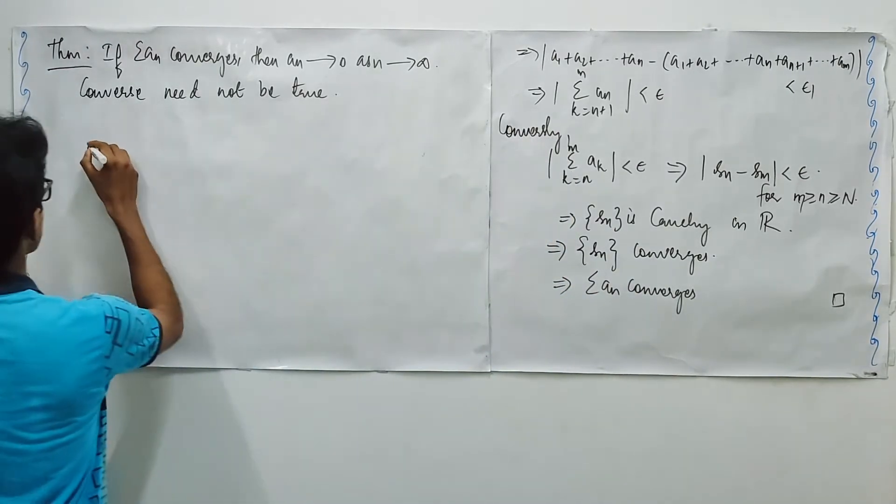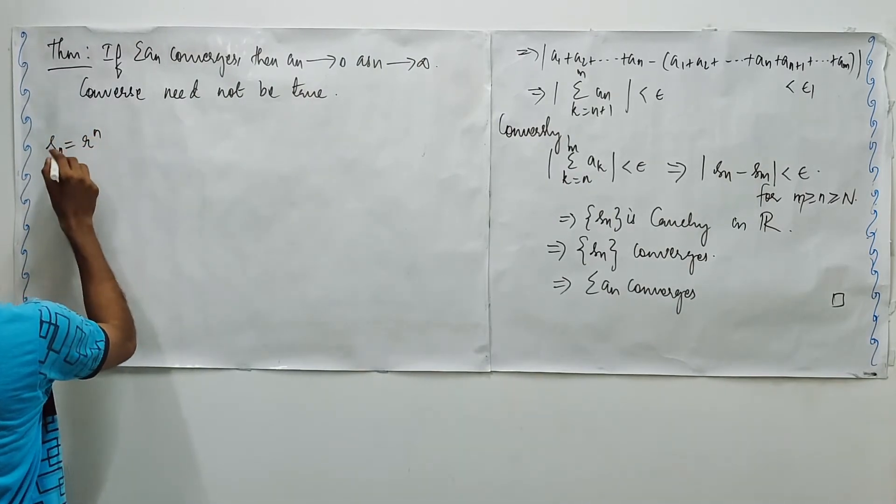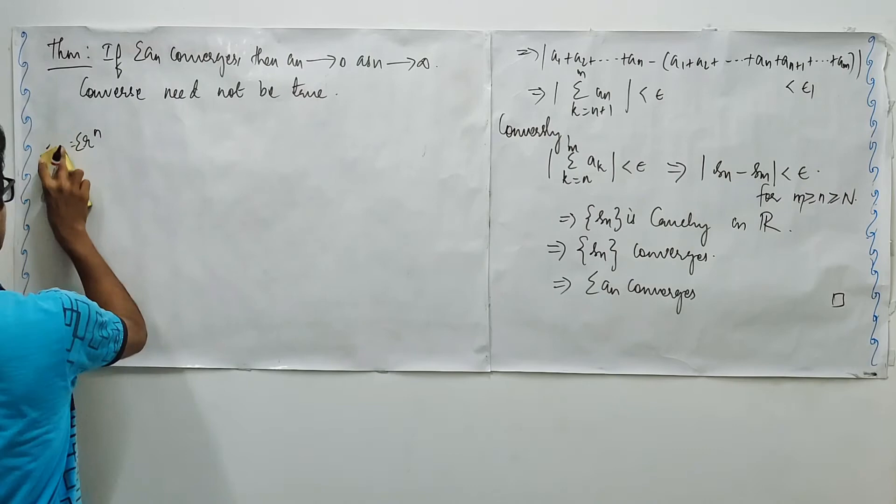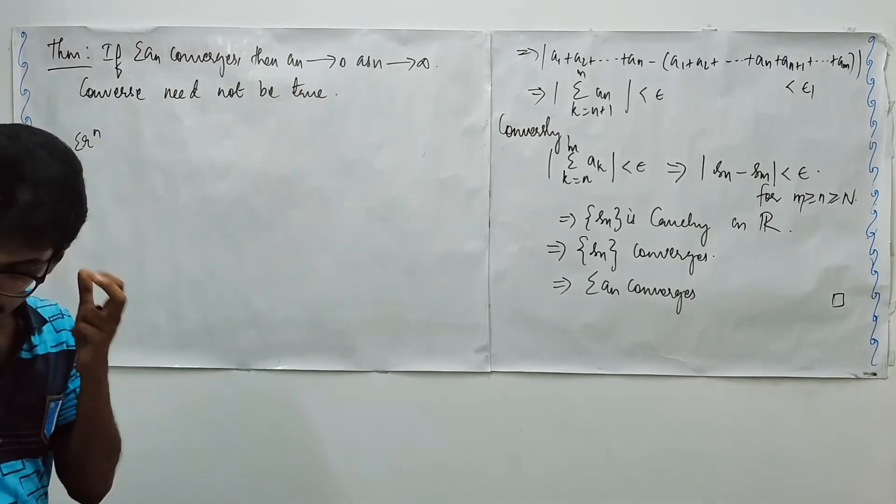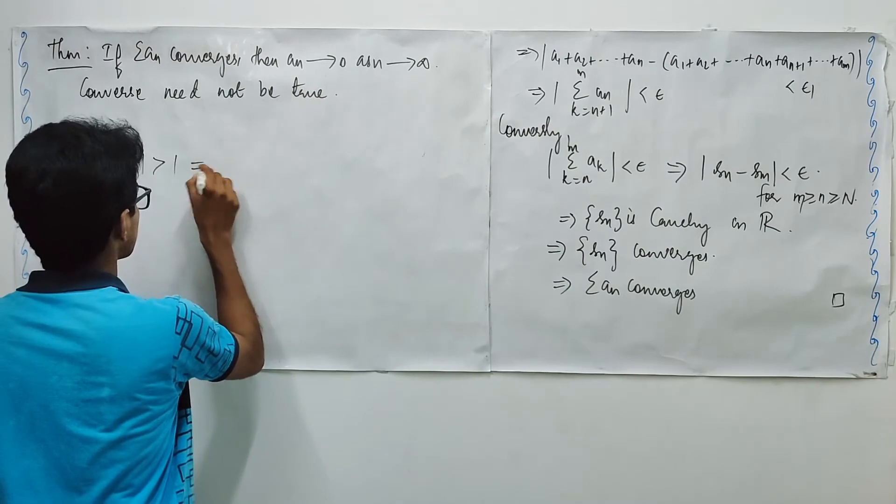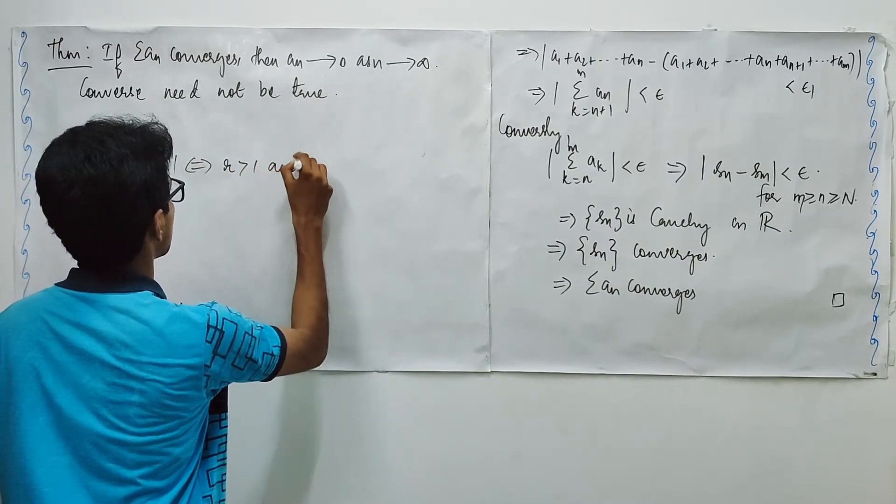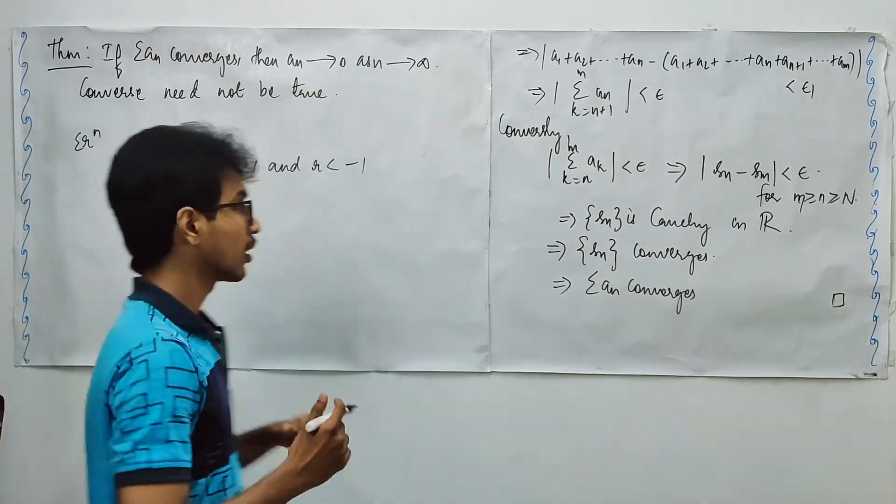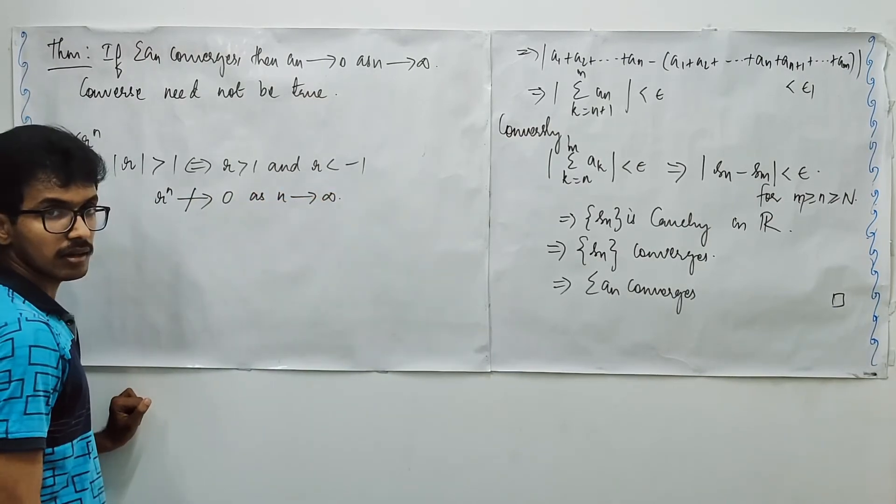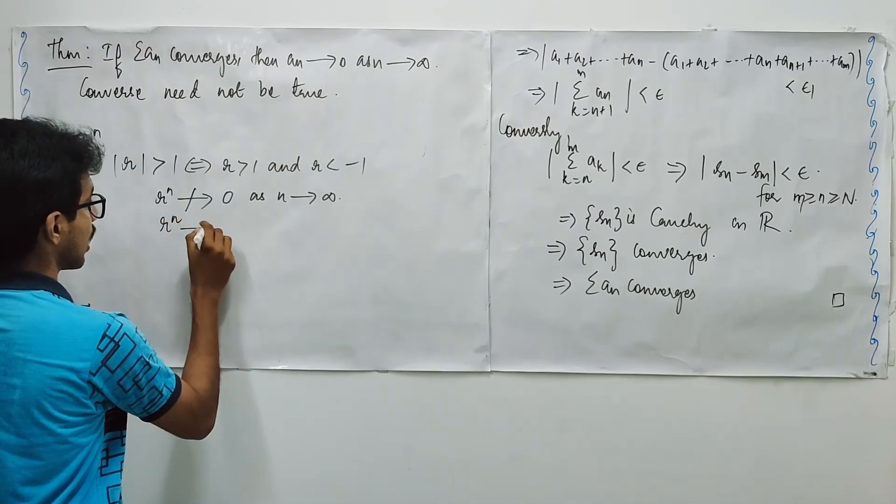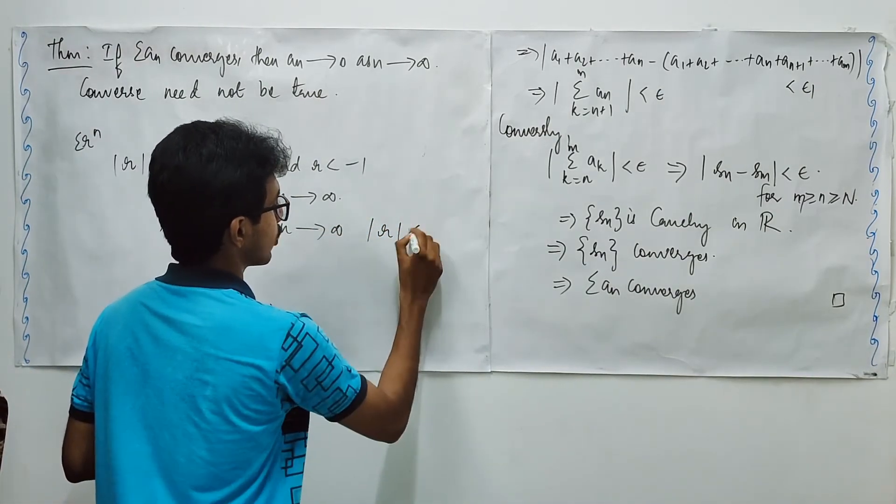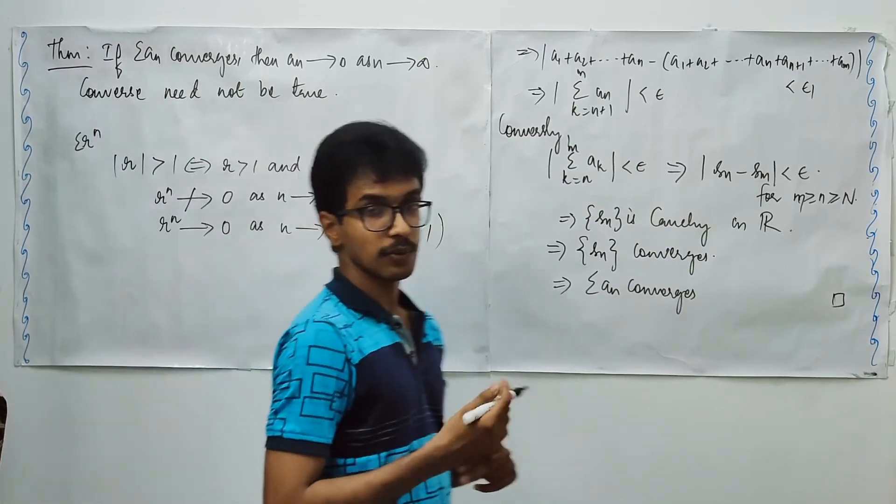For example, we have studied the convergence of summation r^n. We have discussed the convergence of this series in the previous lecture. When your r, absolute of r was bigger than 1, that is r is bigger than 1 and r is smaller than minus 1. For these two cases, your r^n does not approach 0 as n approaches infinity. So in this case, it was not convergent. Your r^n approaches 0 as n approaches infinity for the case when absolute of r is smaller than 1.